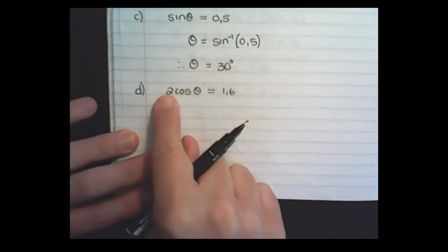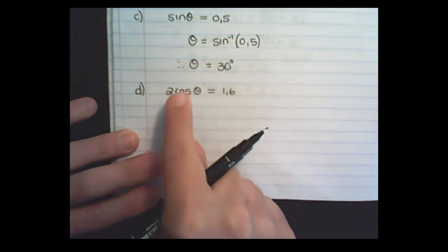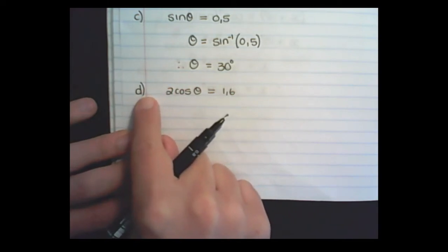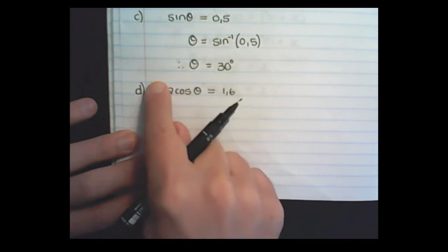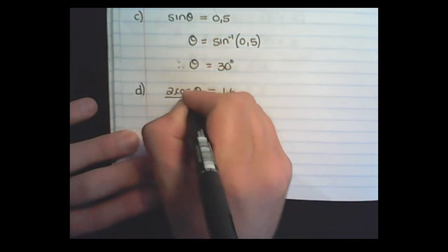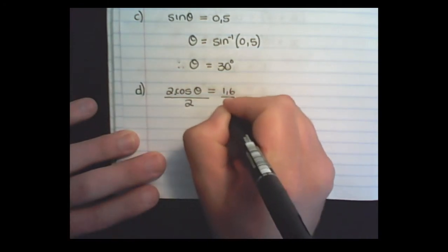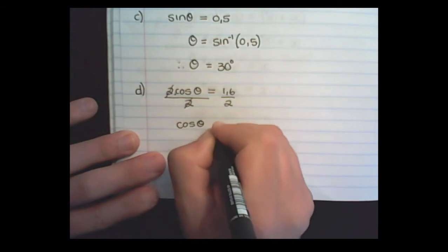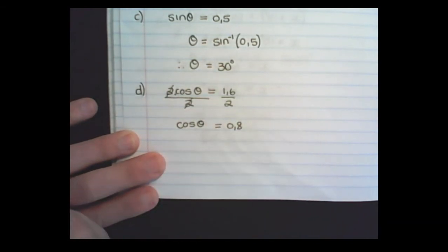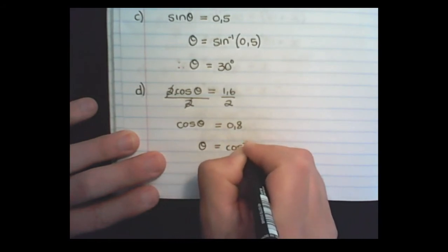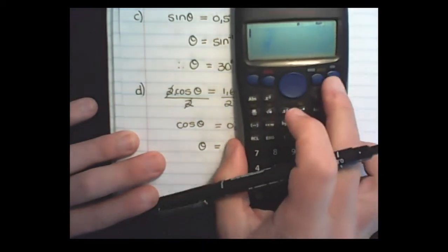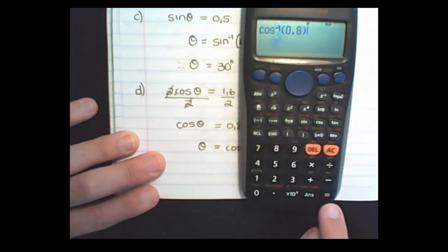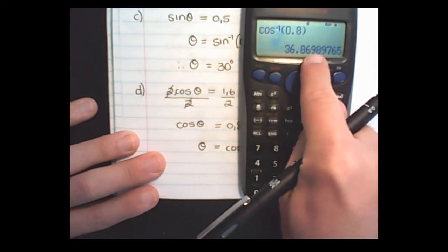In the next example, we have 2 cos theta is equal to 1.6. Now in order to find cos theta, I need to get rid of this 2. Starting from left to right, I divide by 2 on both sides — the 2's will cancel each other out, so I have cos theta is equal to 0.8. Now I can find theta by taking the reverse on my calculator: shift, cos, 0.8, close the bracket, is equal to 36.87 — remember to round properly.